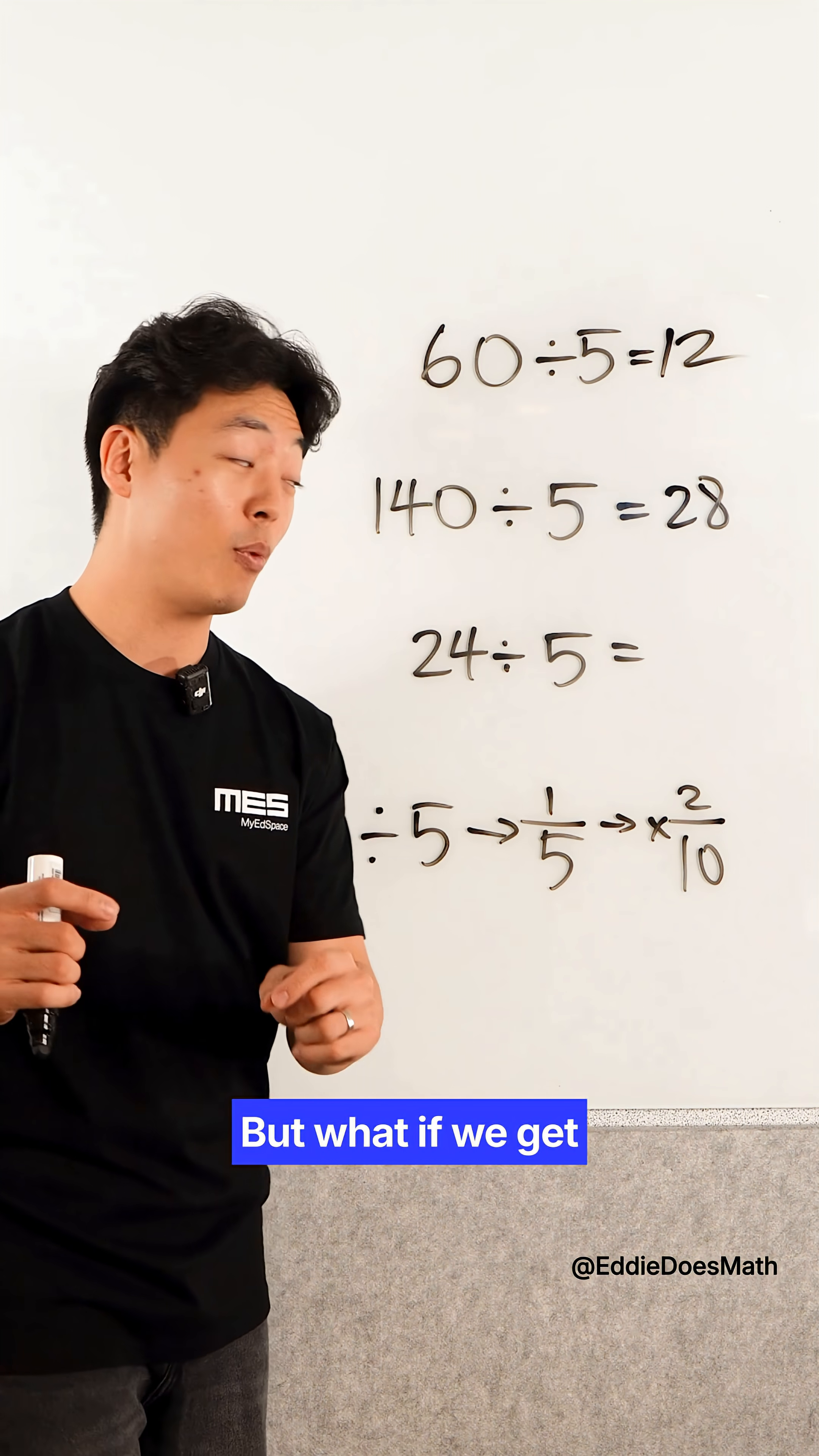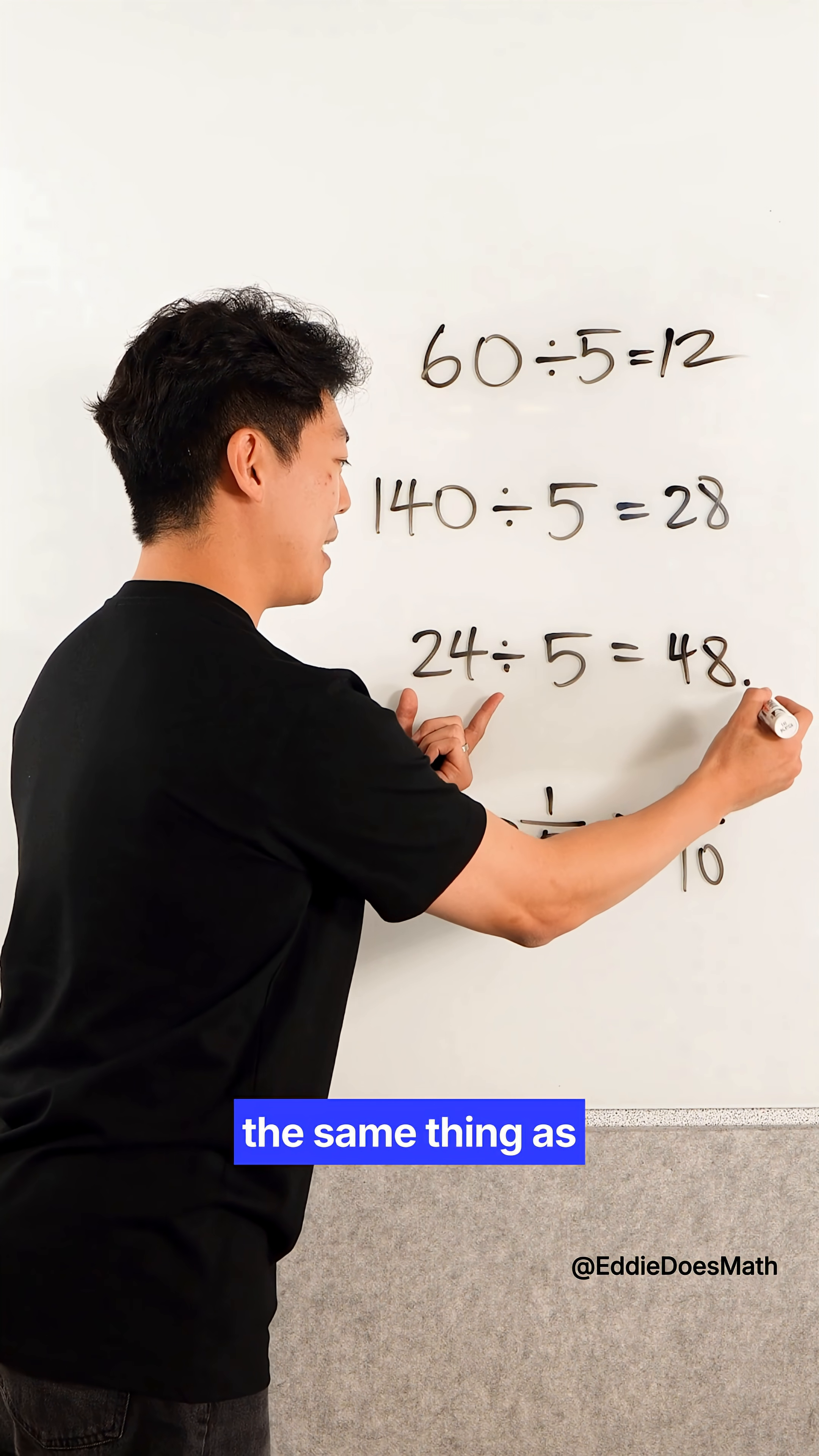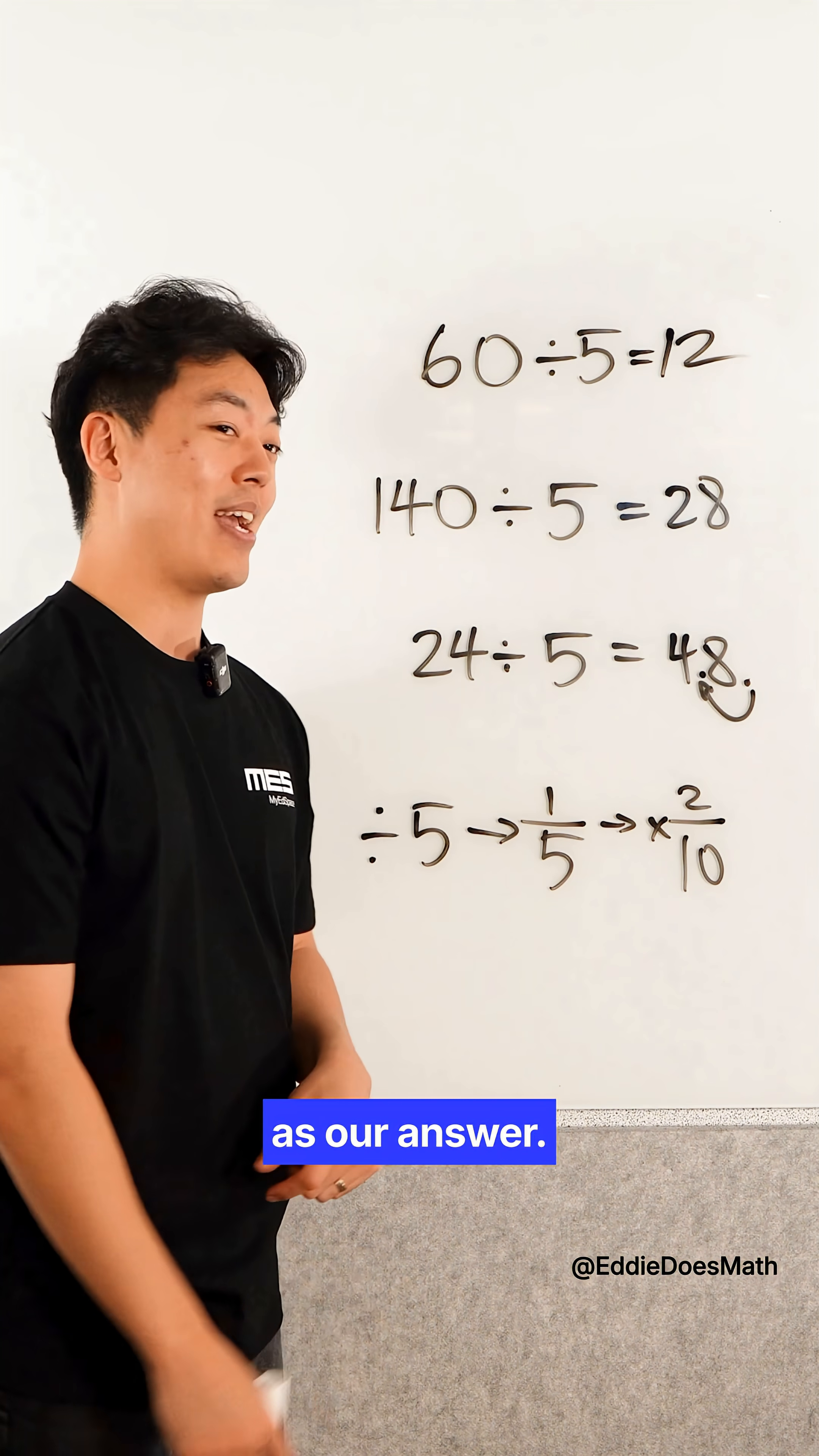But what if we get a number that's not divisible by 5 too easily? Well, double it. 24 times 2 is 48. Dividing by 10 is the same thing as moving that decimal place over one place to the left and we get 4.8 as our answer.